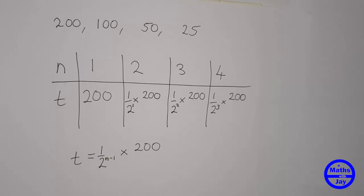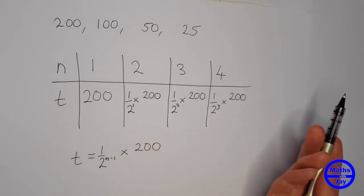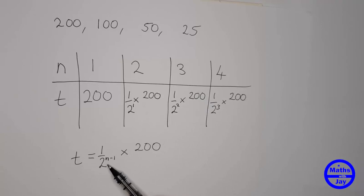Now we could check that by substituting in any of our n numbers, so for example when n is 3 we've got 3 minus 1 there, so that's 1 over 2 squared, which is a quarter, times 200 is 50.